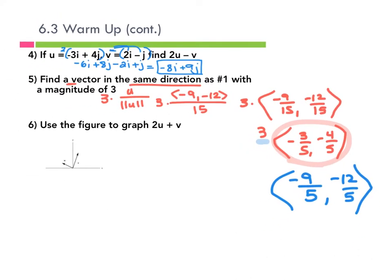So if it had just said unit vector, this would have been the end. But because it says with a magnitude of three, we're changing the length of what we just found. So I'd get negative nine-fifths and negative twelve-fifths. It's in the same direction as our initial one — if we had drawn it, the slopes should appear the same, they should be parallel. But the magnitude is not necessarily the same.